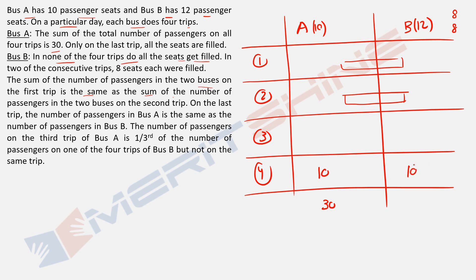The last piece of information: the number of passengers on the third trip of Bus A is one third of the number on one of the trips of Bus B, but not on the same trip. So if Bus A Trip 3 is X, then one of the Bus B trips (not Trip 3) is 3X. Since Bus B Trip 4 is already 10, and 10 is not a multiple of 3, and Trip 3 is excluded, 3X must fall in Trip 1 or Trip 2.